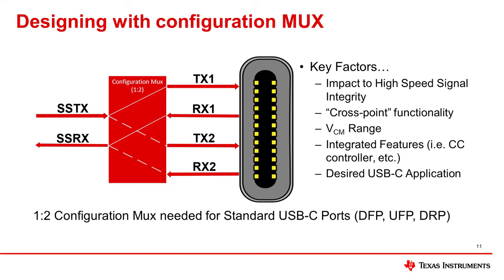Here you can see a simplified example of designing with a configuration MUX for USB only. The SSTX pin will be MUXed to TX1 and the SSRX pin will be MUXed to RX1 for normal USB-C orientation. When the USB Type-C orientation is flipped, SSTX will then be MUXed to TX2 and SSRX will be MUXed to RX2.